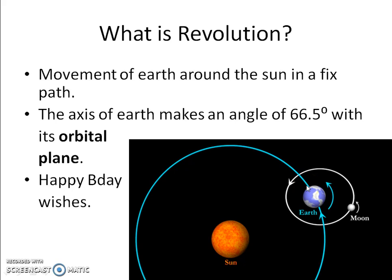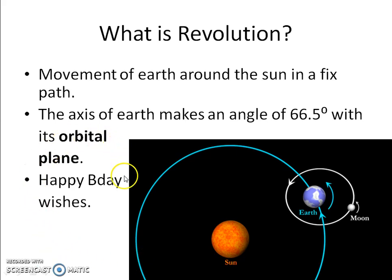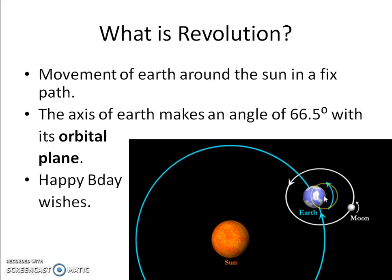Whenever I say 'remember,' my meaning is that you understand this — do not confuse the word 'remember' with memorizing. Now, when the Earth completes a full circle around the Sun, that is one revolution. You can even give birthday wishes to a friend on their birthday, because that means the Earth has completed one revolution since their last birthday.